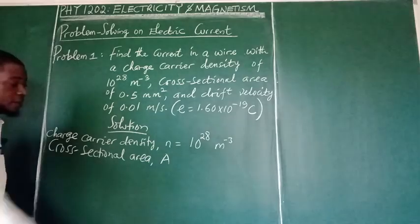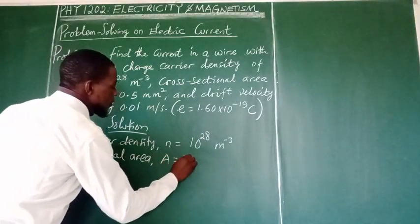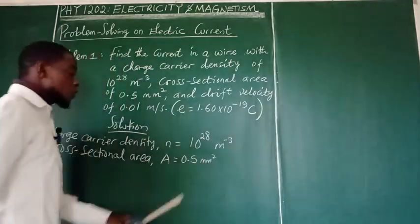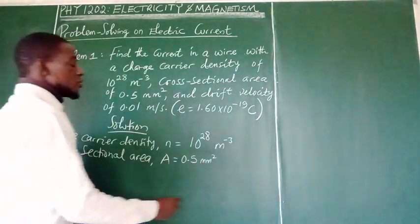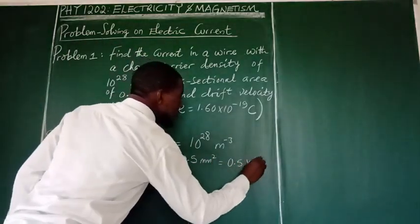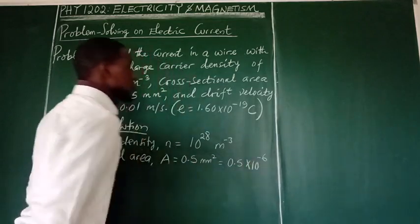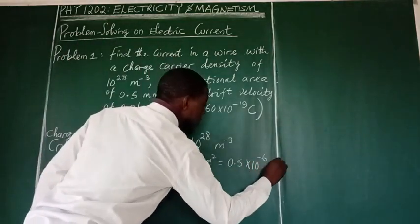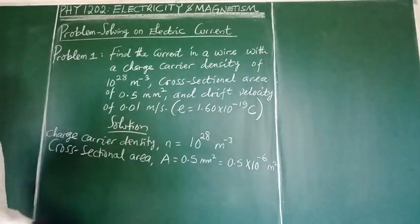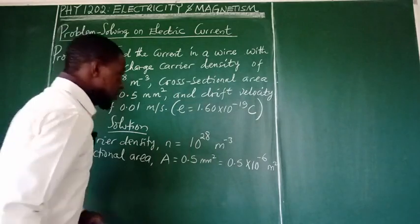The second one given is cross-sectional area, denoted by A in the upper case. And this is 0.5 square millimeters. Now square millimeters is not the unit. We multiply this 0.5 given by 10 to the power of minus 6 to change it to square meter. This is always necessary.